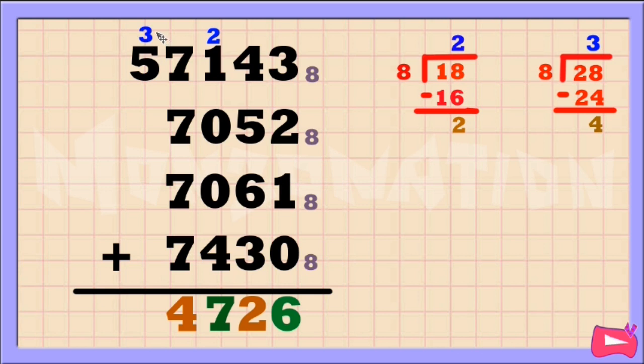And for the last column: 3 plus 5 is 8. 8 is not an octal number because 7 is the highest value in base 8. So let's convert 8 into octal. 8 divided by 8 is 1. 1 times 8 is 8. Then let's subtract: 8 minus 8 is 0. This 0 here is our sum and the quotient here, which is 1, is our carry.